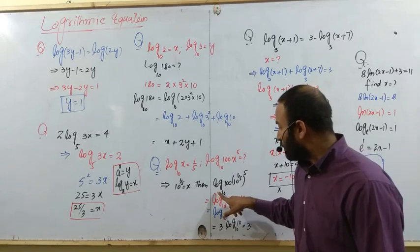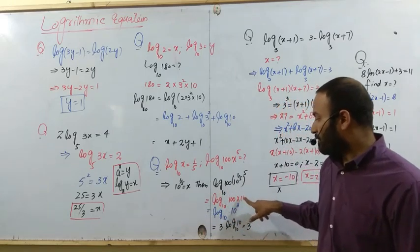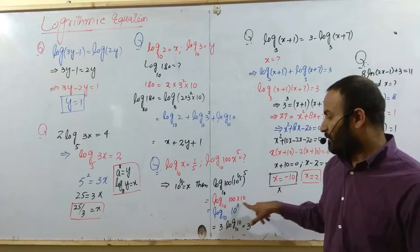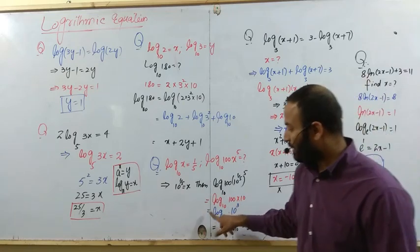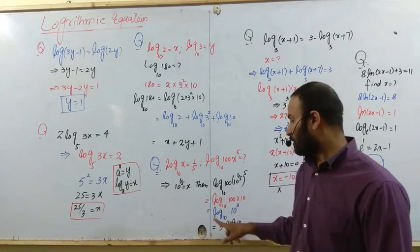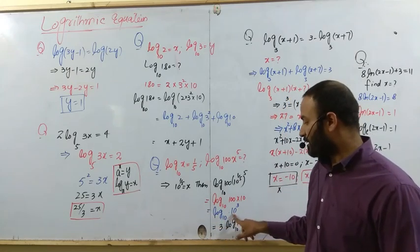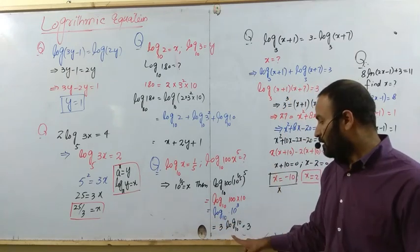Now you calculate log base 10 of (100 times 10). It will become 10 to the power 3. Again, the log property applies. So log base 10 of x's value is 1. This is one problem.